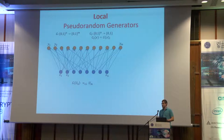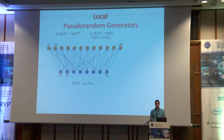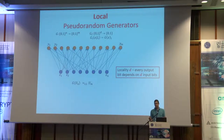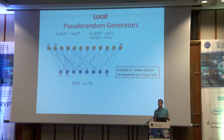One central notion of simplicity that was considered in the past two decades is something called locality. What is a local pseudorandom generator? It's the same thing — a function that maps from n bits to m bits — but it's simple in the following sense: each output bit G_i is a local function. G_i doesn't look at all n input bits, but only at specific ones. There is some mapping I_i that selects the indices relevant for computing the i-th output.